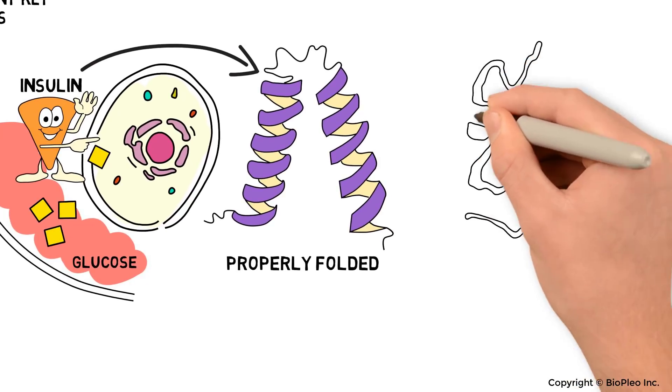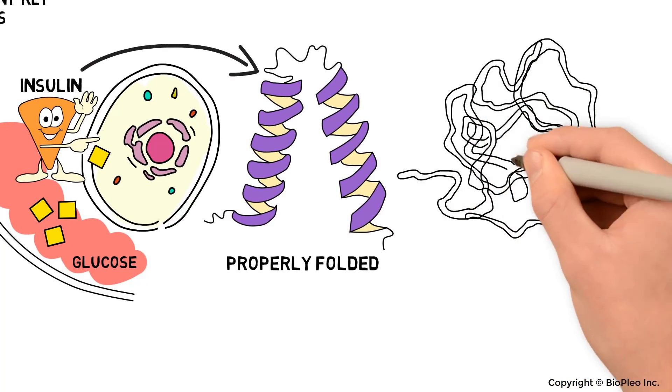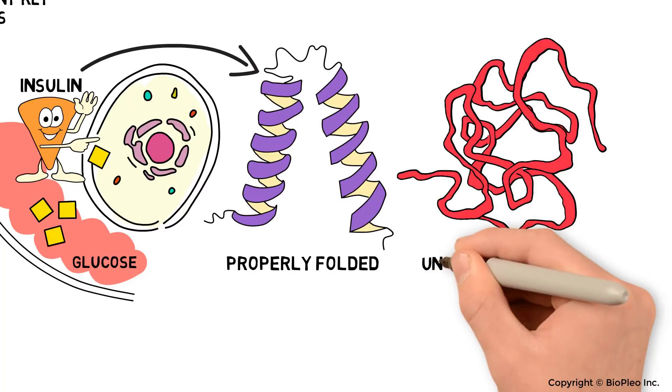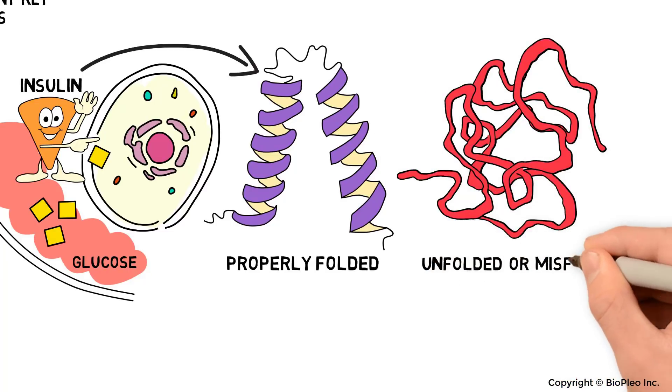Sometimes proteins don't fold correctly, and instead they behave kind of like floppy, sticky spaghetti noodles. Scientists call these noodles unfolded or misfolded proteins.